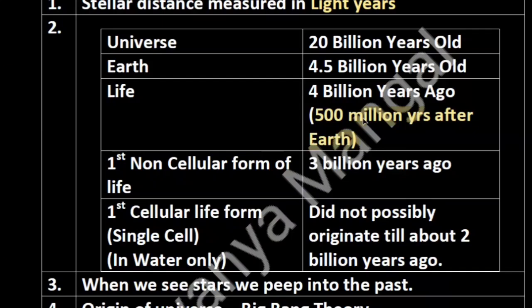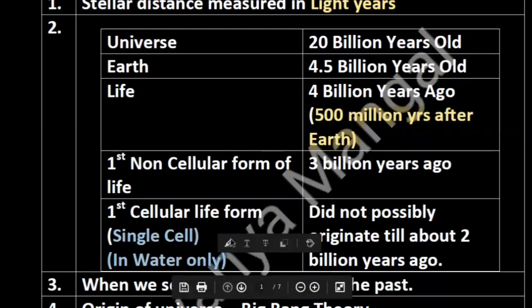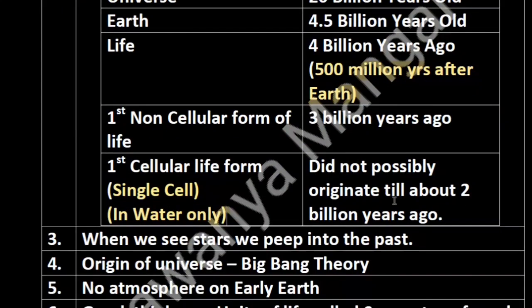The first non-cellular form of life is thought to have existed 3 billion years ago. The first cellular form of life, which was a single cell and was just in water, is thought to have appeared around 2 billion years ago. This is NCERT's exact statement.